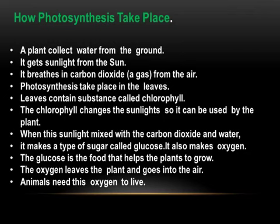Leaves contain a substance called chlorophyll. The chlorophyll changes the sunlight so it can be used by the plant. When sunlight is mixed with carbon dioxide and water, it makes a type of sugar called glucose. It also makes oxygen. The glucose is the food that helps the plant to grow. The oxygen leaves the plant and goes into the air. Animals need this oxygen to live.